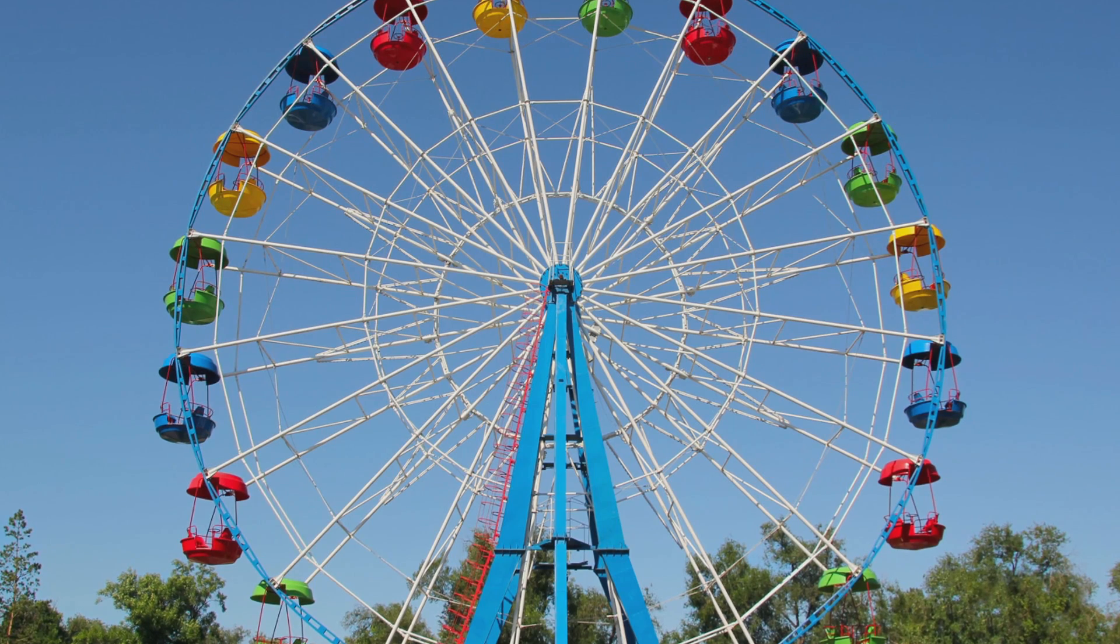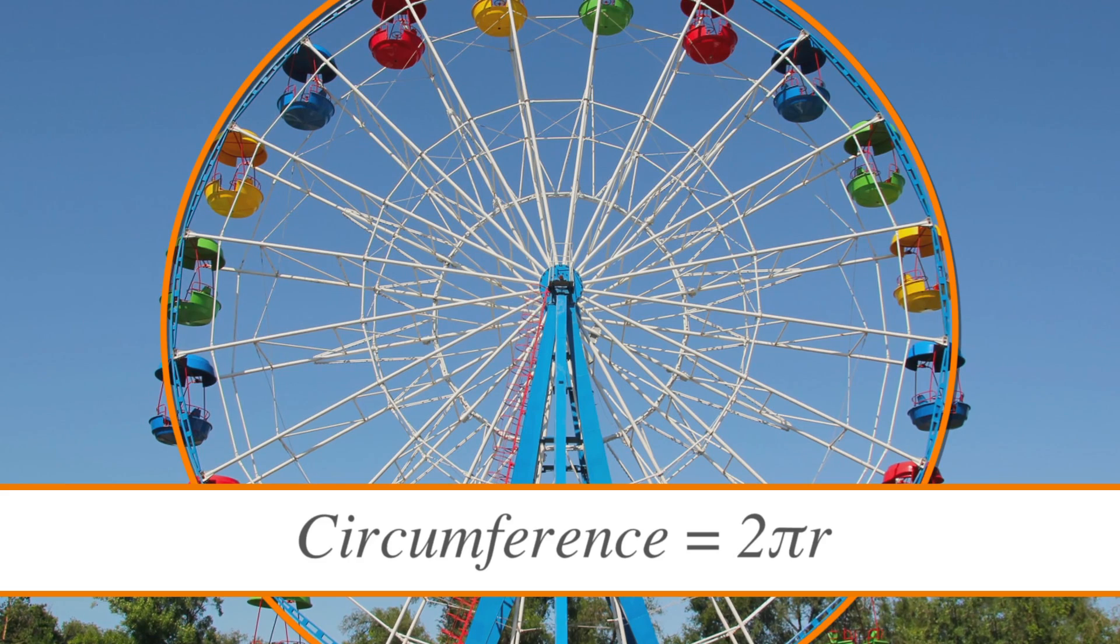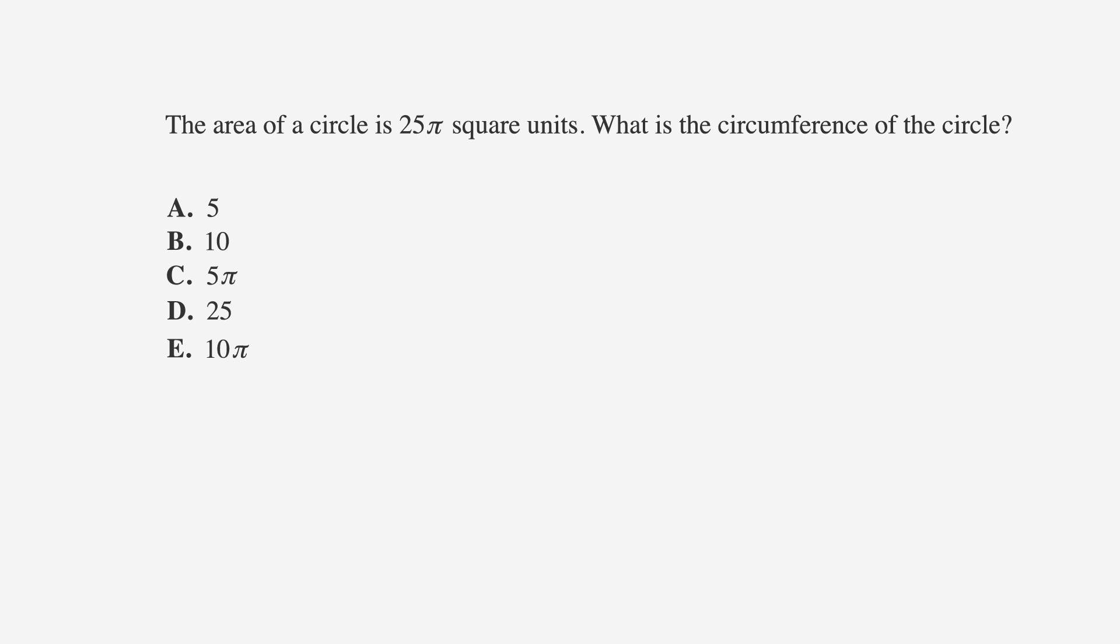The equation for finding the circumference is circumference equals 2 times pi times r. Now that we have the equation covered, let's try an ACT problem where we find the circumference of the circle. The area of a circle is 25 pi square units. What is the circumference of the circle?